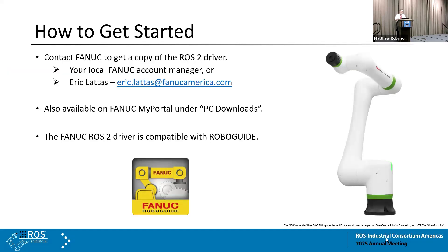To get a copy of the driver right now, we keep it on MyPortal, which is the customer portal for FANUC. There are two ways to get it: the long road is to talk to your FANUC account manager and get set up, or you can email me directly and I can arrange to get that driver sent to you to try it out. Also worth noting: ROS2 is compatible with RoboGuide, so a lot of the testing we do is in RoboGuide because you don't have to walk down to the lab. Very convenient.